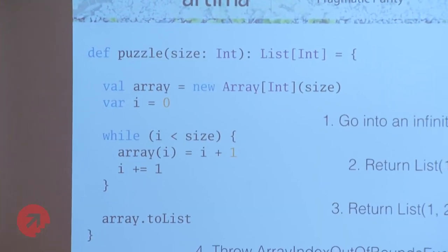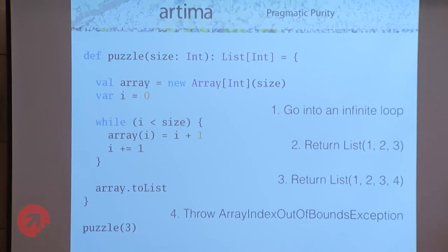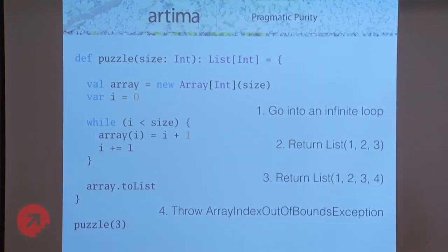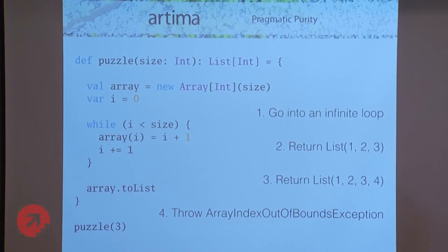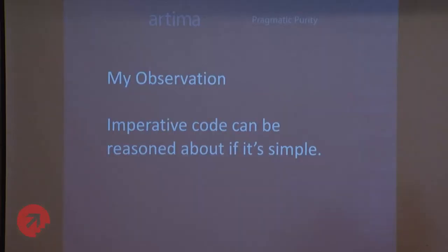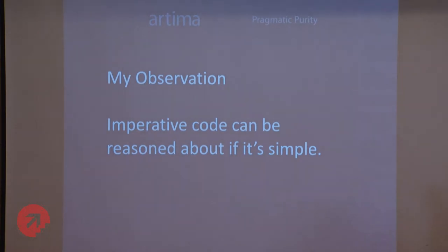This was imperative code. The point I wanted to make is I think this is a counter-example of something we believe — the corollary that pure functions are easier to reason about than impure functions implies that impure functions are hard to reason about. What I've discovered is that imperative code can be reasoned about if it's simple. That's one data point I wanted to put out there.